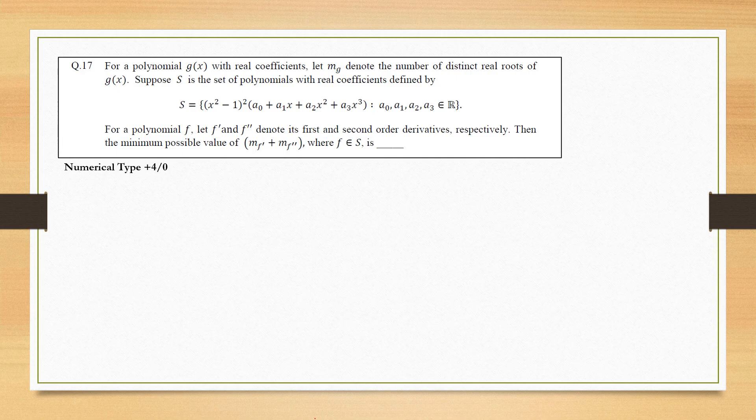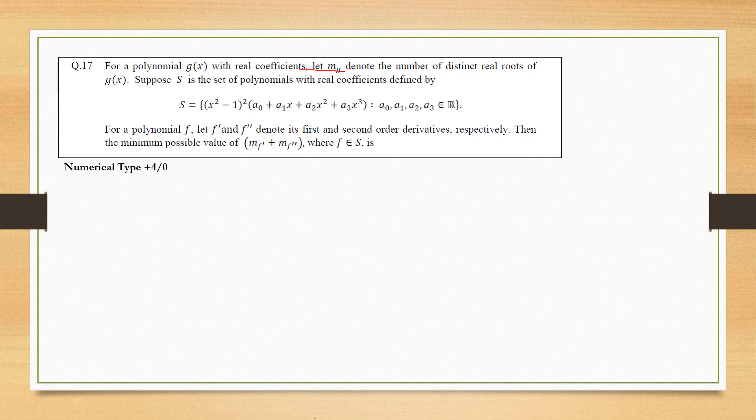For a polynomial g(x) with real coefficients, m_g denotes the number of distinct real roots of g(x). Suppose S is a set of polynomials with real coefficients defined by this.